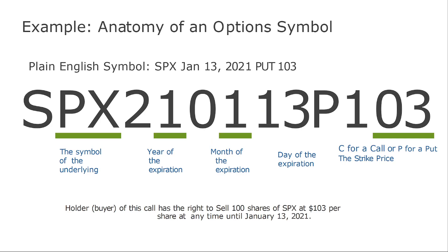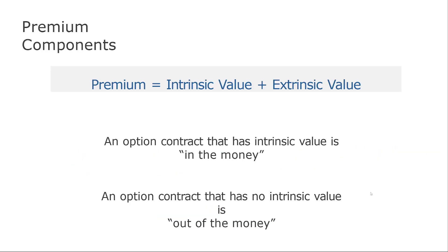Let's look at the anatomy of an option symbol. An option contract appears like this: SPX 210113 P 110. SPX is the symbol of the underlying asset. The first two digits are the year of expiration, the next two are the month, and the last two are the day. Then we have a C or a P for call or put, followed by the strike price. In this case, the holder — the buyer — has the right to sell 100 shares of SPX at $103 at the end of January 13, 2021.